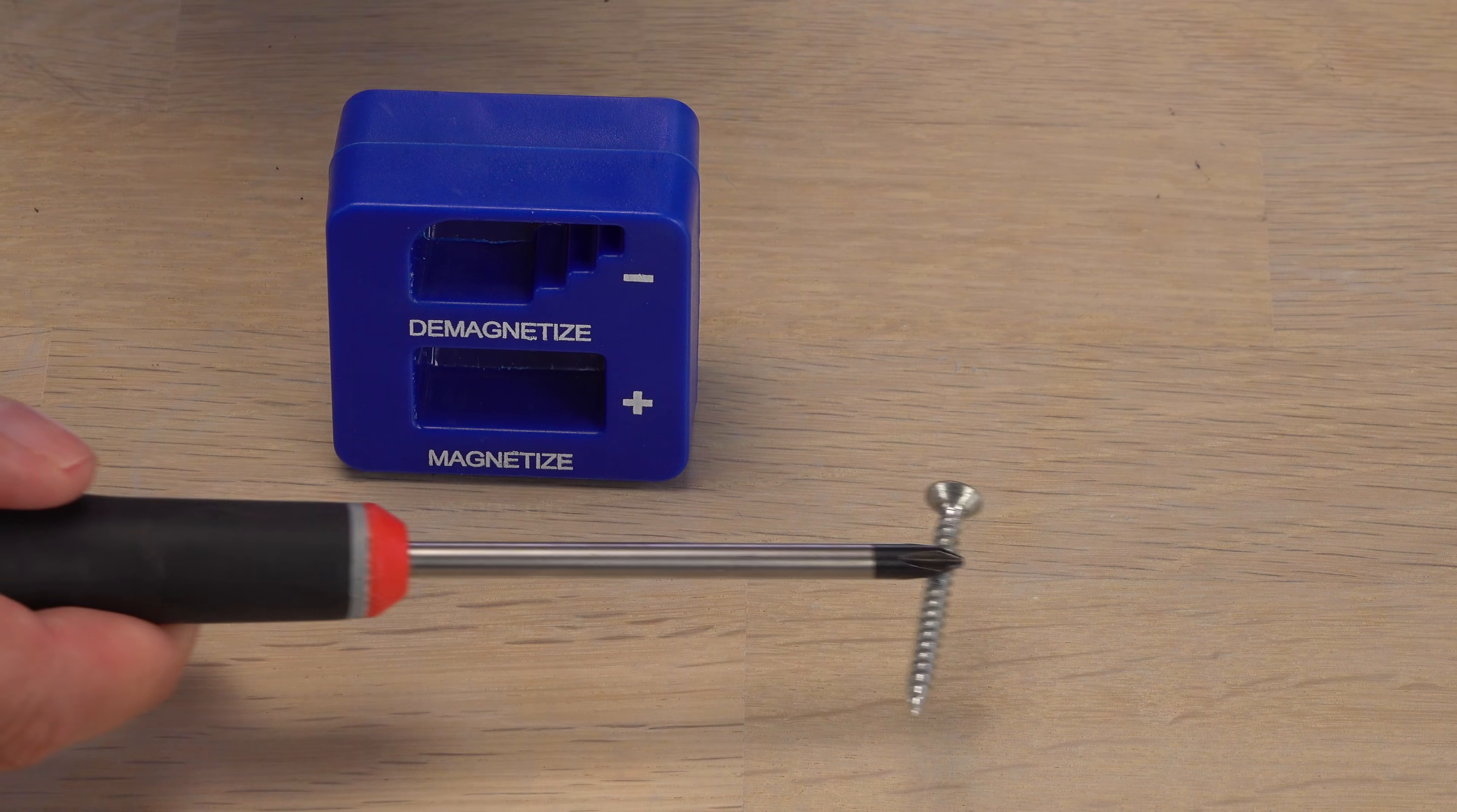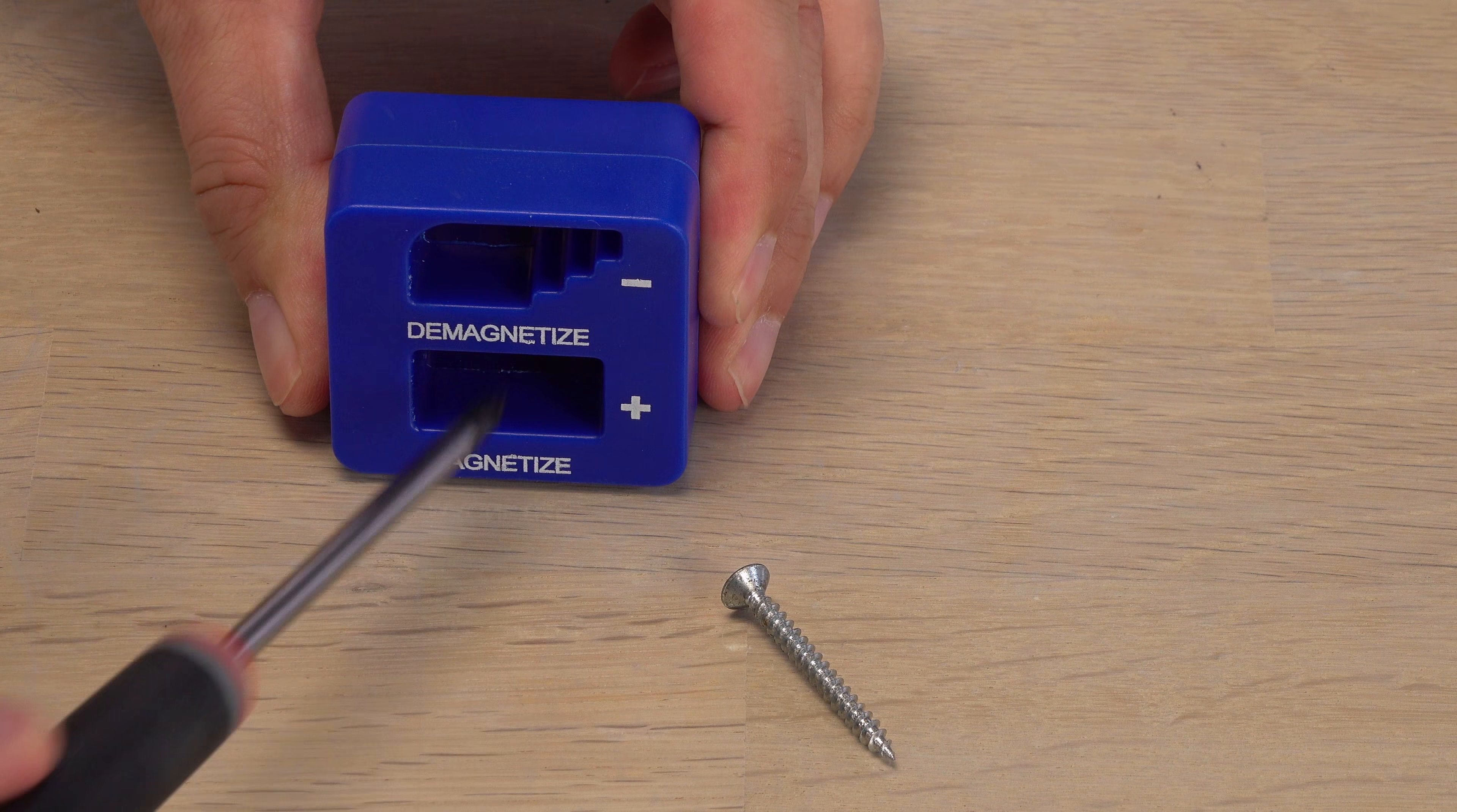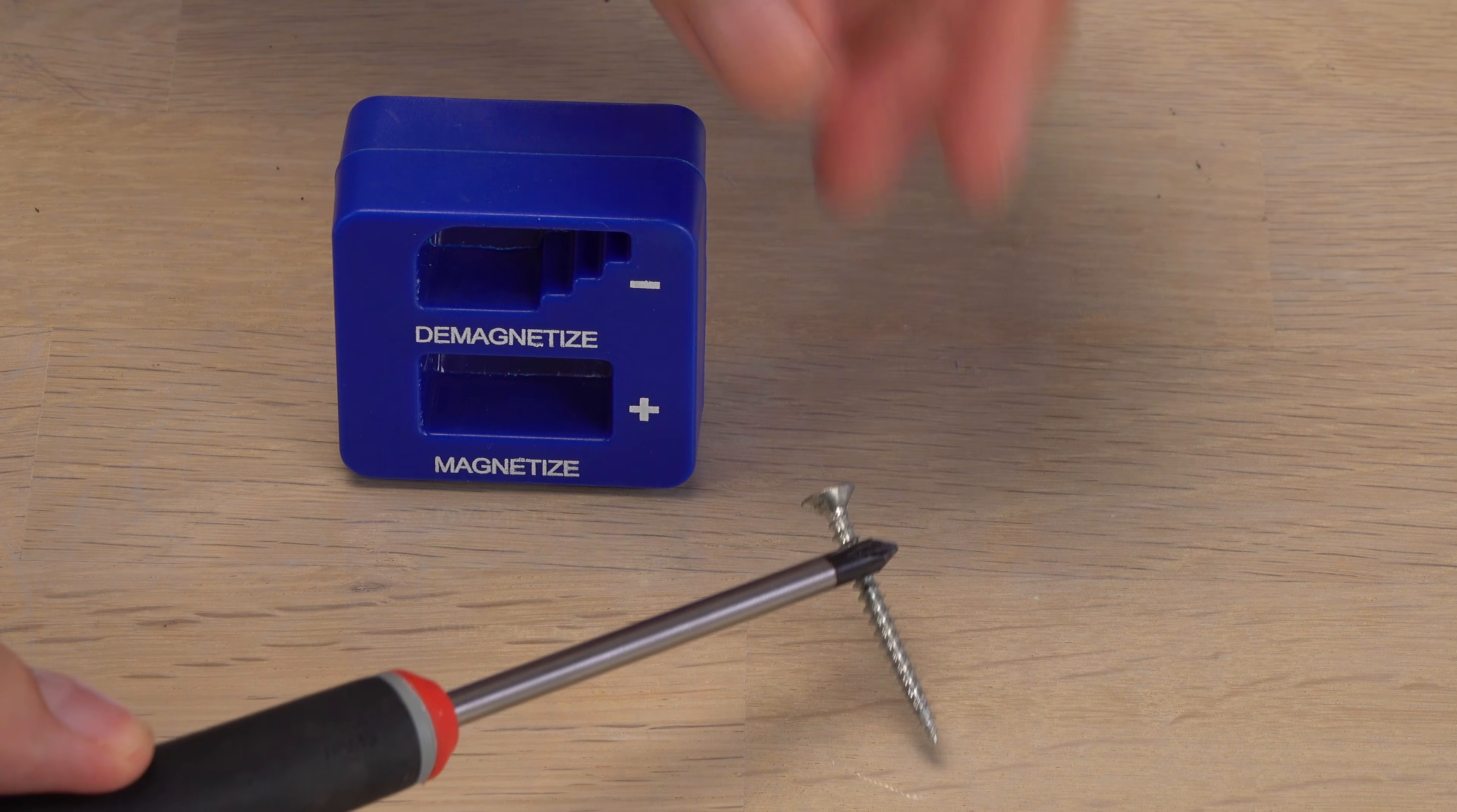You may already know this magnetizer demagnetizer tool. It is handy for making a screwdriver magnetic to hold a screw by itself, and demagnetize it again when not needed. It works surprisingly well.